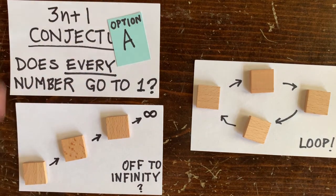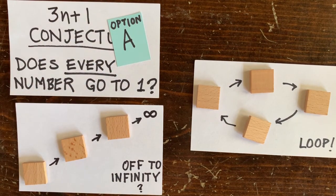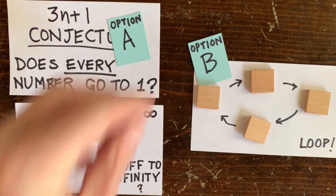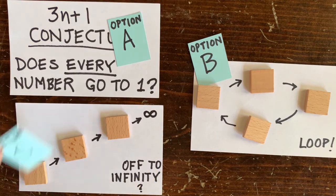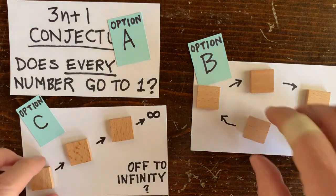So there are 3 ways to resolve this famous conjecture. First, we could prove that every number goes to 1. Instead of trying them all, which is impossible, we need some airtight argument.